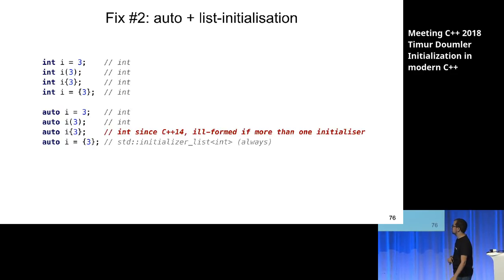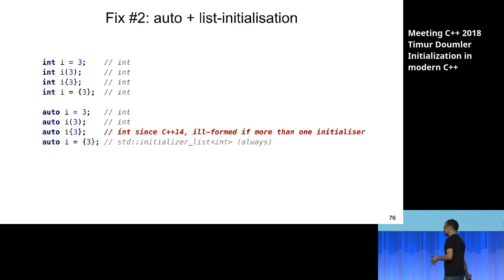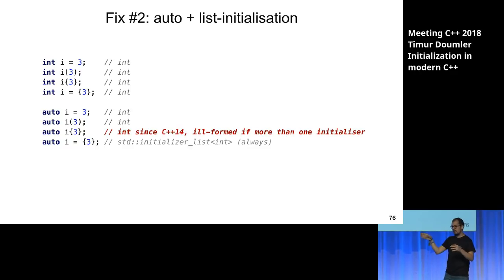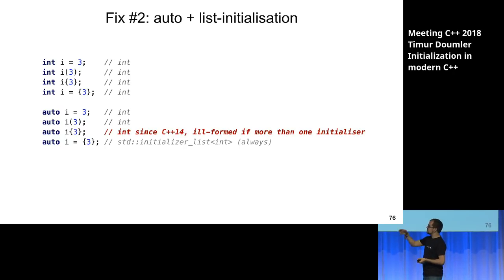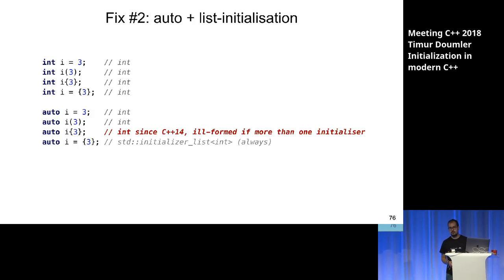That got partially fixed in C++14. Direct list initialization with auto — `auto i{3}` — is now valid only if there's one element, and that deduces int (not std::initializer_list). If you have more than one element in direct list initialization with auto, it's ill-formed. However, copy list initialization with auto — `auto i = {3}` — still deduces std::initializer_list, always, no matter how many elements. That's at least consistent with itself.